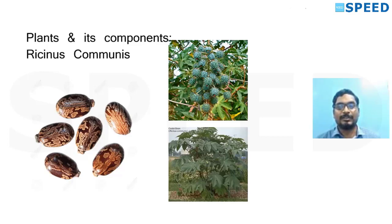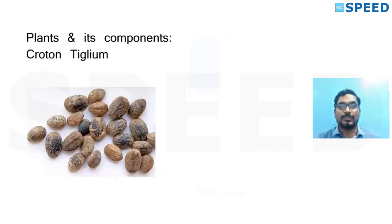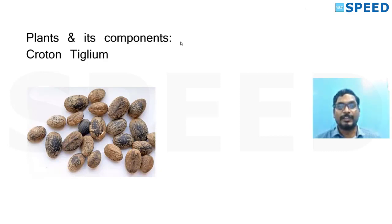The Ricinus seed is also known for its 'palm of Christ' appearance — the pattern on the surface of the seed is called palm of Christ appearance. Now look at the next slide: the seed you see alongside the Ricinus seed is the Croton tiglium seed. They look exactly alike — even textbooks define Croton tiglium seed as resembling Ricinus seeds, except they are dull.